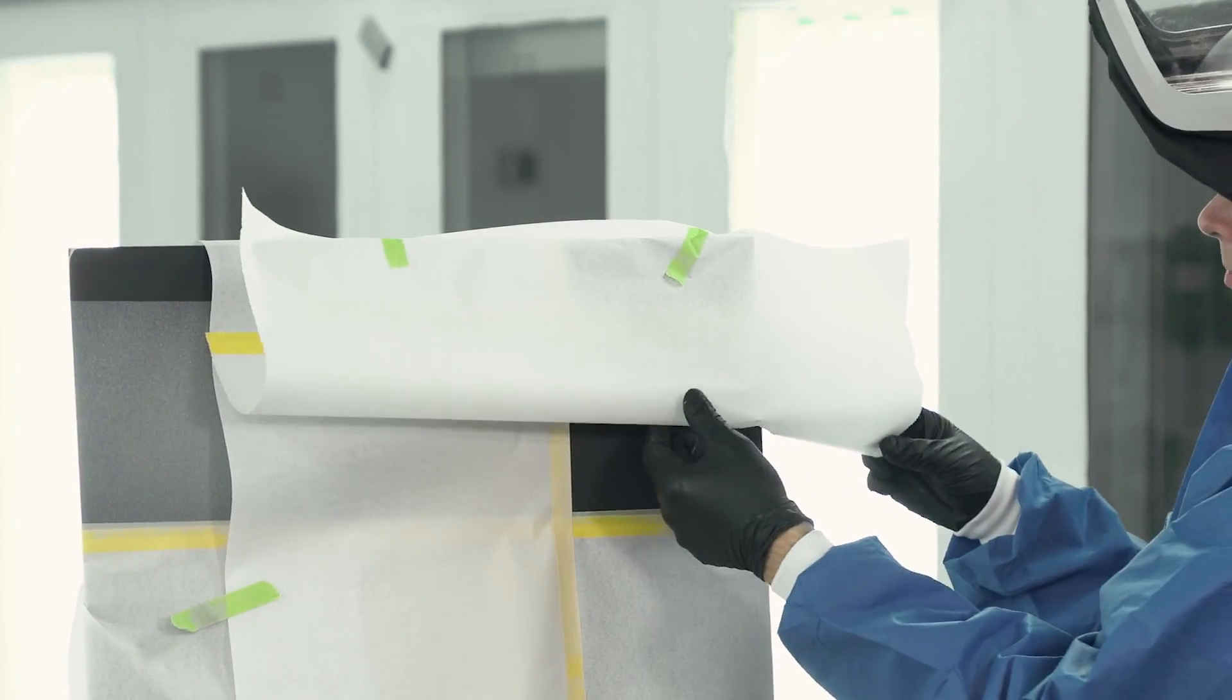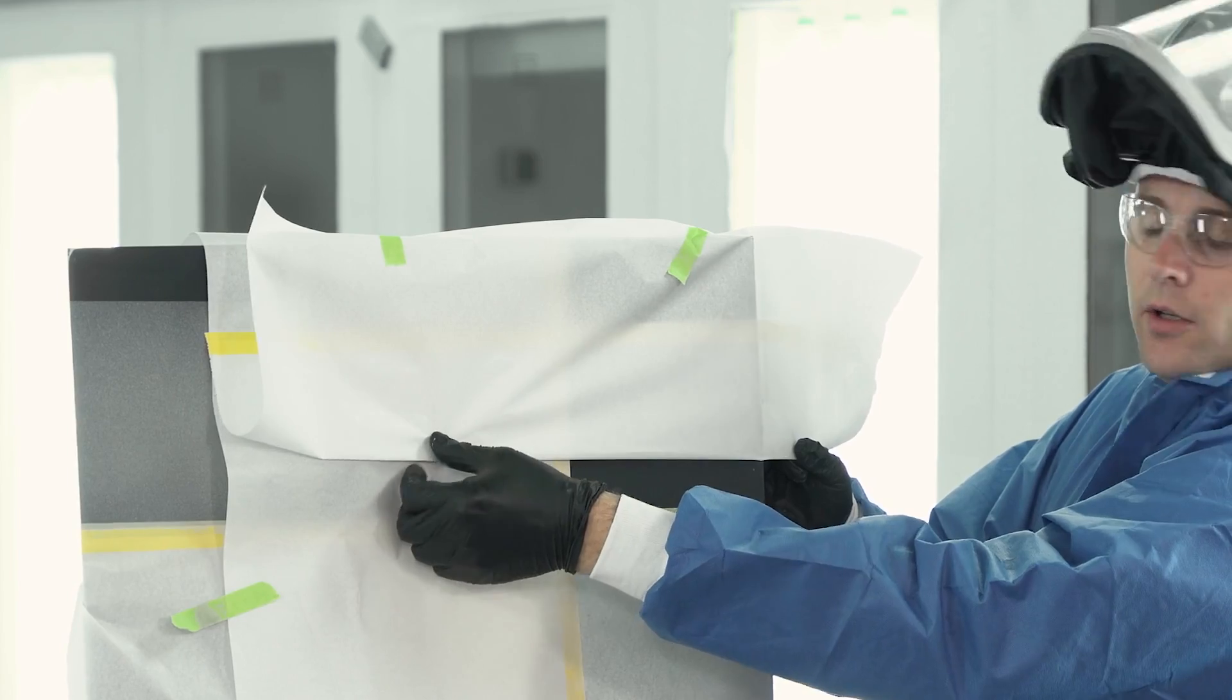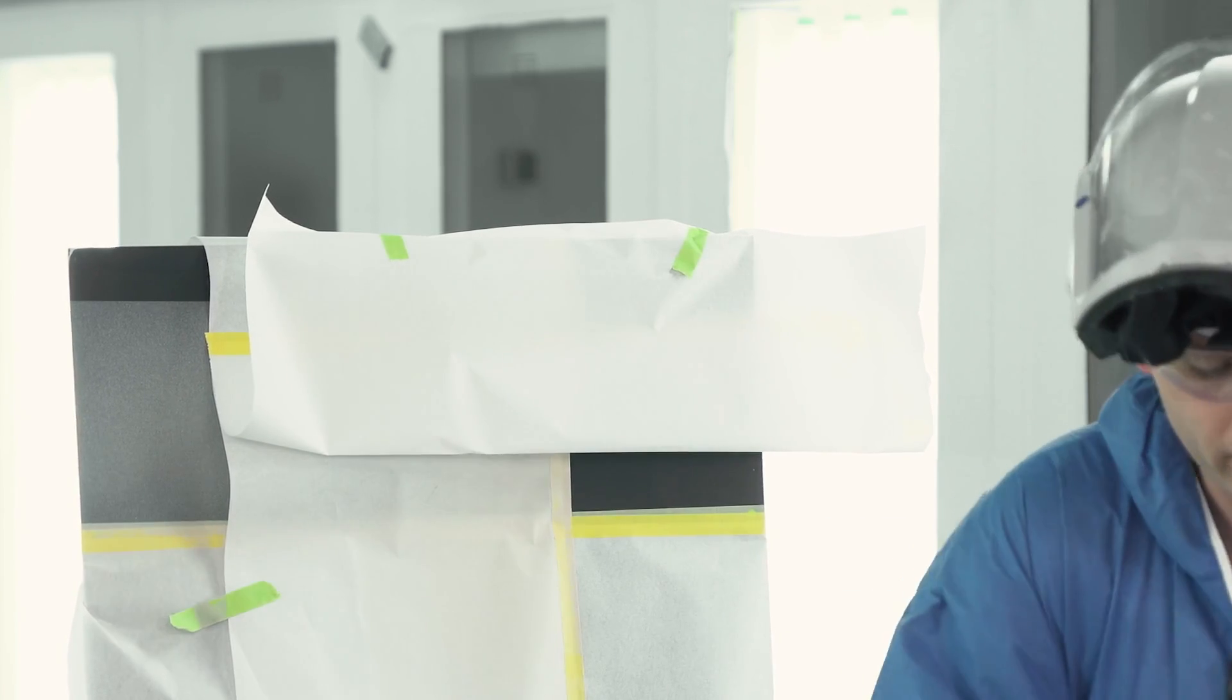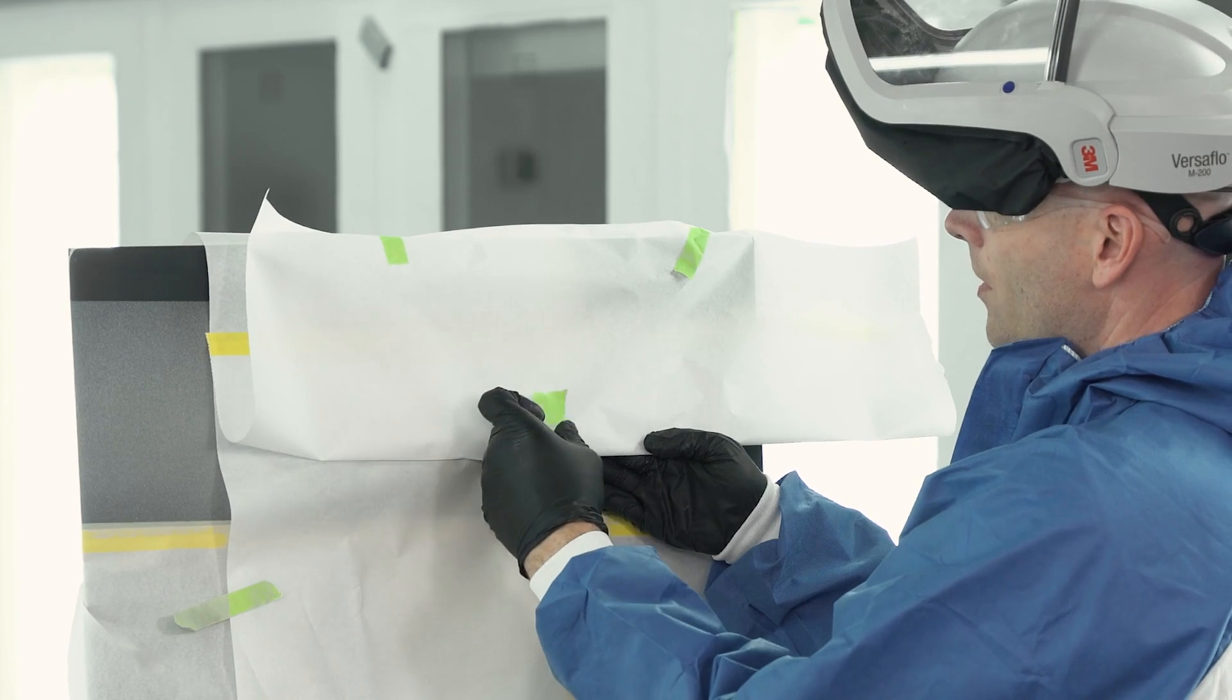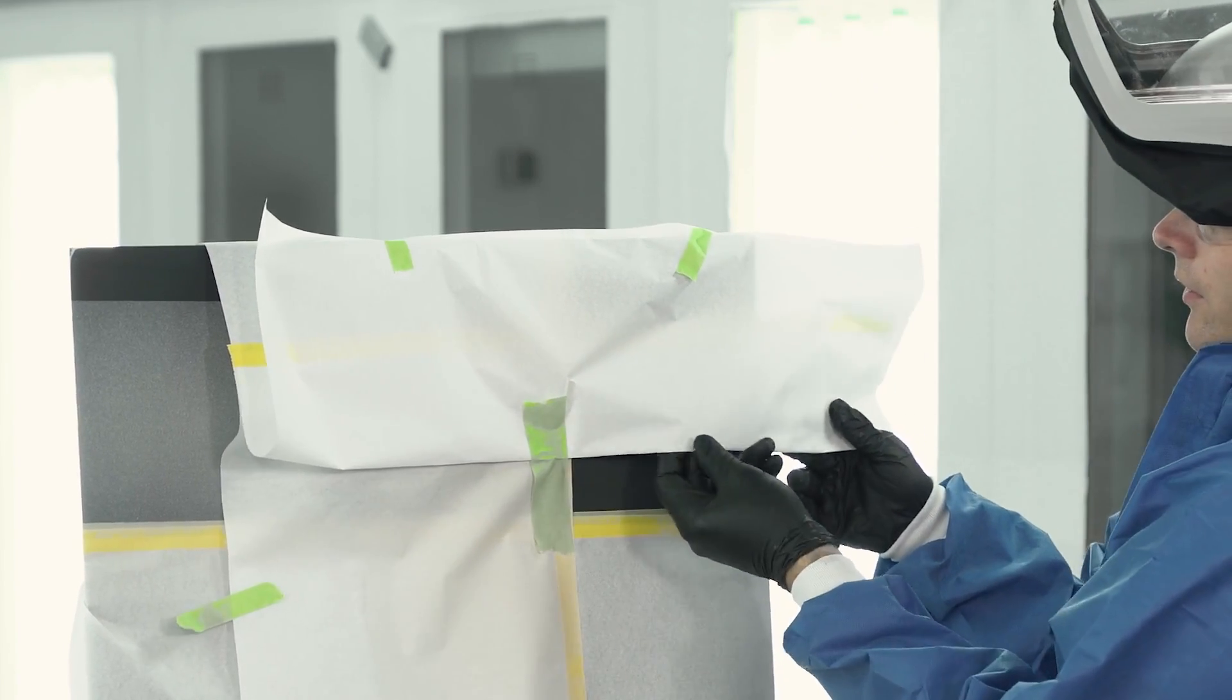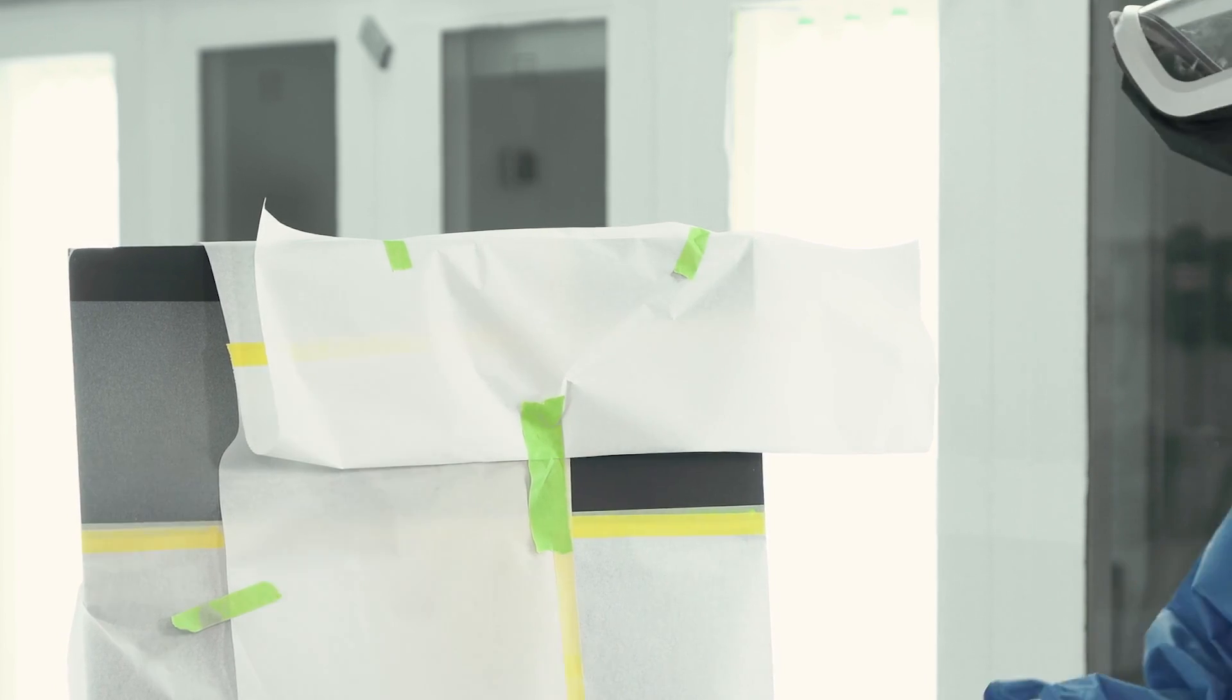So once you have the paper applied, you can kind of fold your paper, and the tighter you keep it to the panel, the sharper that transition is going to be. The further we pull it away, the softer that transition will be. And then to hold it in place, I just like to use a little bit more tape, hold my paper where I want it, and then stick down the tape to my edge to make sure my distance stays the same across the panel. And typically you can tape the back side of the paper as well, just to make sure it's not going to shift around on you.